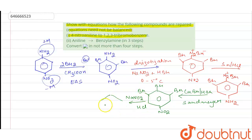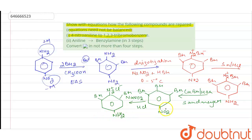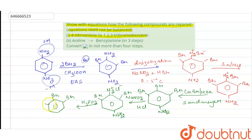We perform a second diazotization reaction using NaNO₂/HCl at low temperature, giving a diazonium salt (N₂⁺ Cl⁻) with two Br substituents and an NH₂ group. Finally, reaction with H₃PO₂ removes the diazonium group, and our product 1,2,3-tribromobenzene is formed.